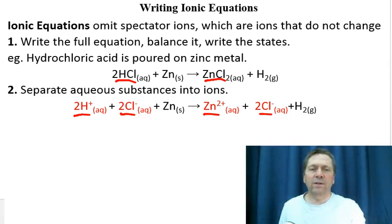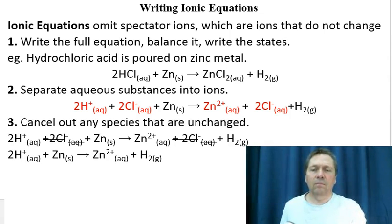Once we have done that, we are nearly ready to write the ionic equation. The third step is to cancel out any species which are unchanged during the reaction. You can see here I have crossed out the 2Cl⁻, the reason is that there are chloride ions here at the start in the reactants, but there are also chloride ions in the products. So the chloride ions haven't done anything. They were in the solution at the beginning, they are in the solution at the end.